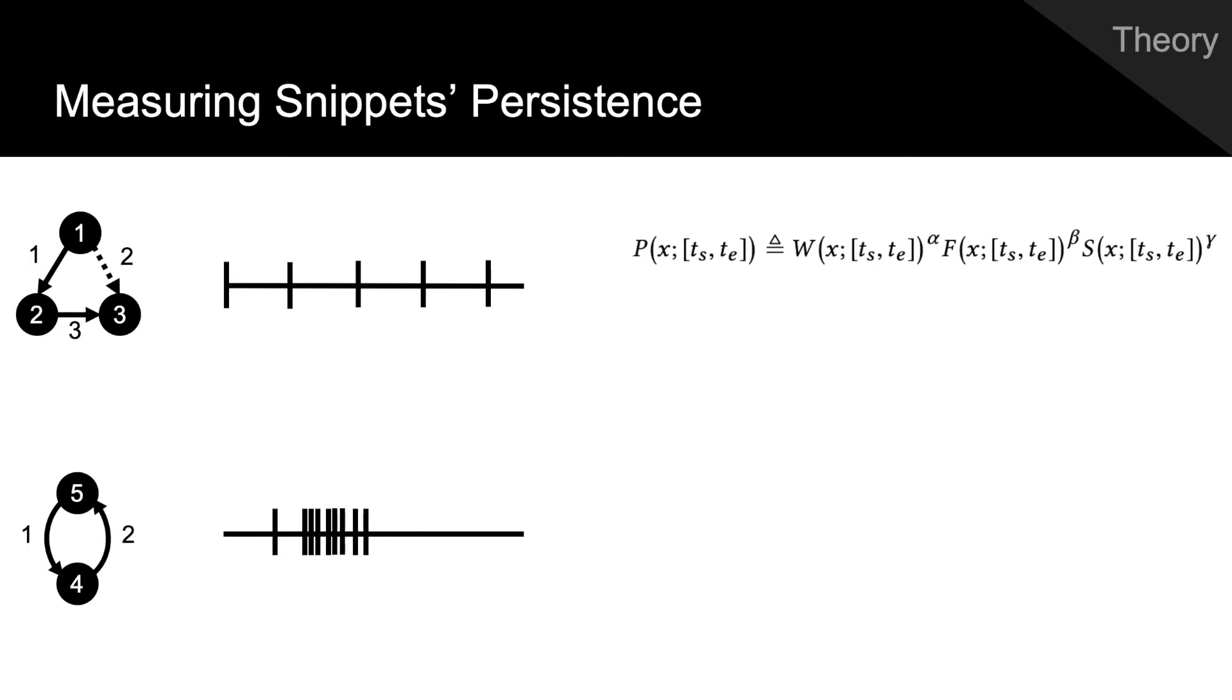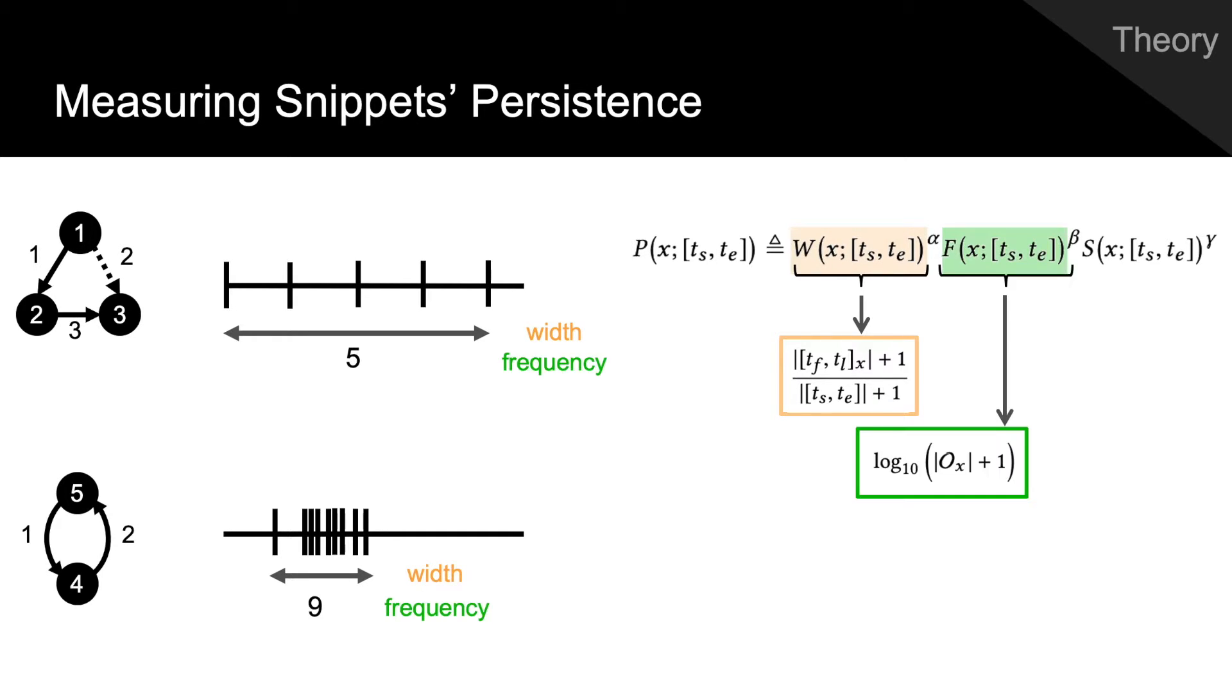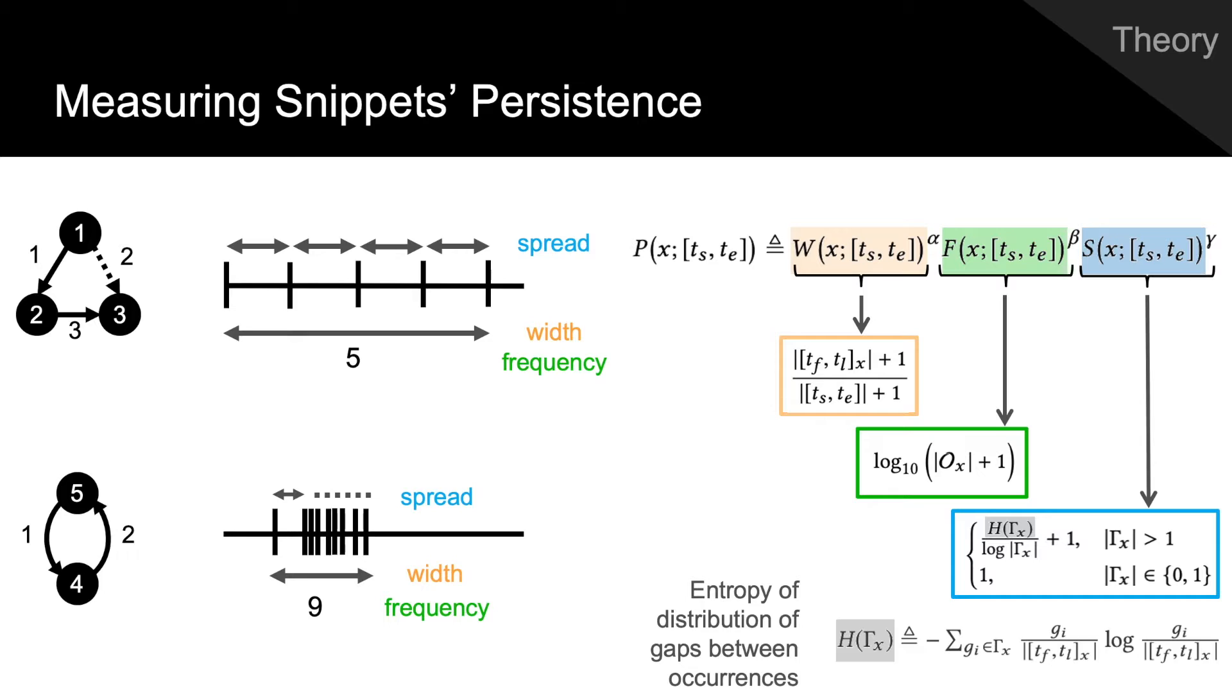To measure persistence, we propose a function that combines the width of the interval in which the occurrences fall, the number of occurrences, and how uniformly those occurrences are spread out. We measure the uniformity of occurrences in a principled way by using the Shannon entropy of the distribution of gaps between occurrences. Entropy, when normalized, captures uniformity of occurrences, such that low entropy means the occurrences are densely packed, and high entropy means they are evenly spaced. Our proposed persistence measure combines these three terms via multiplication and uses exponents on each term to allow them to be weighted depending on the application. We prove that the proposed function satisfies all the axioms of a persistence measure and the desired properties.